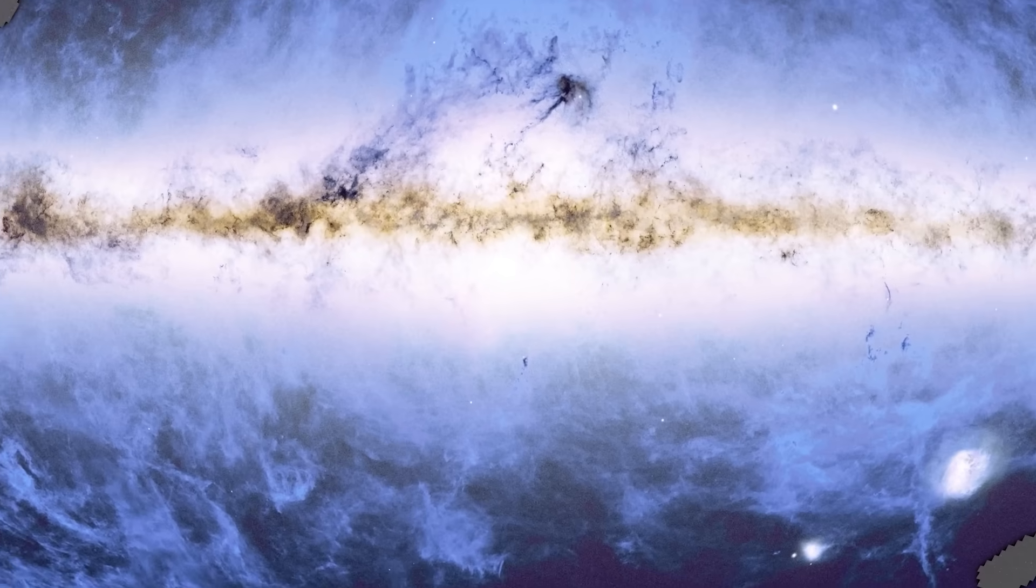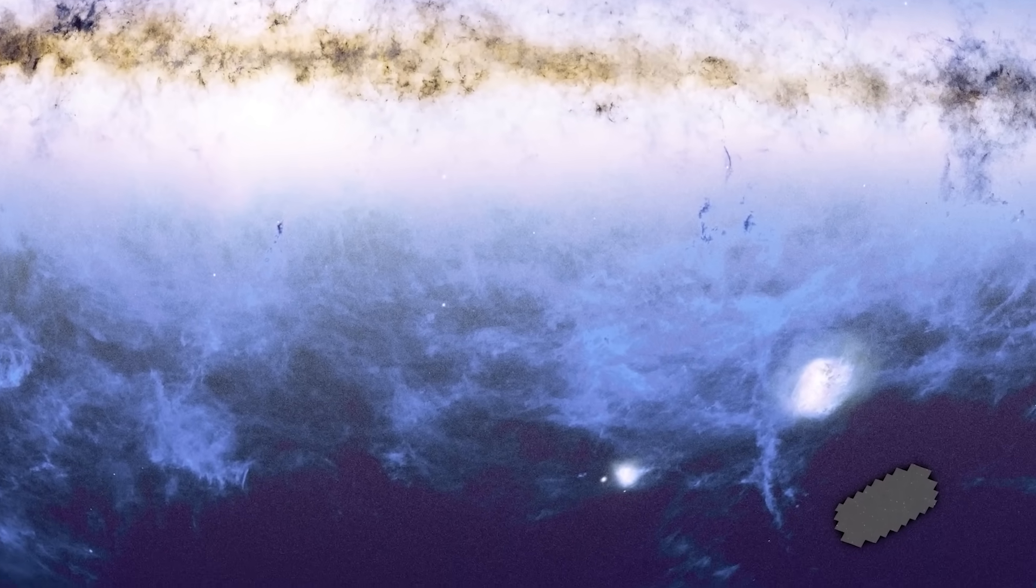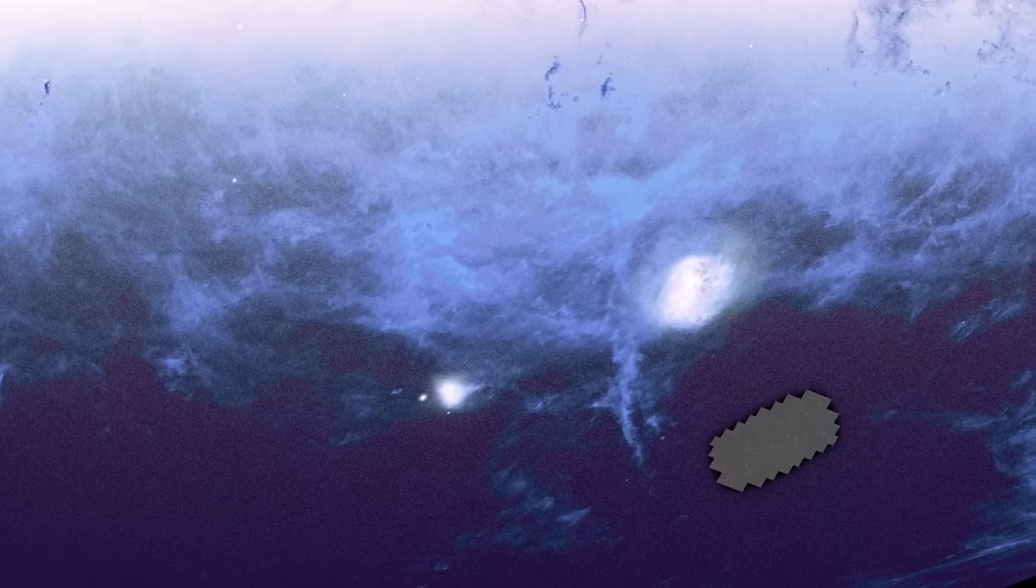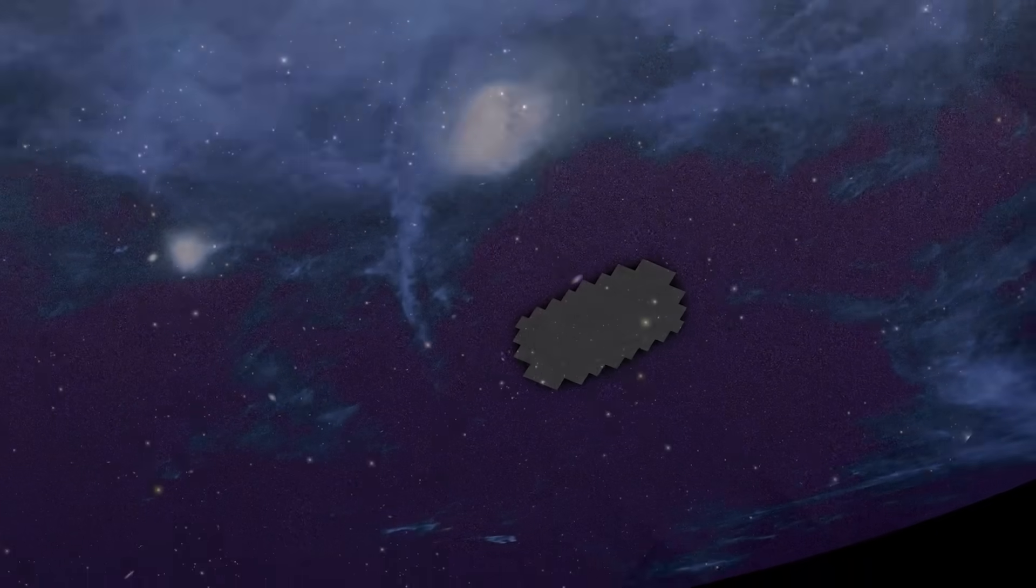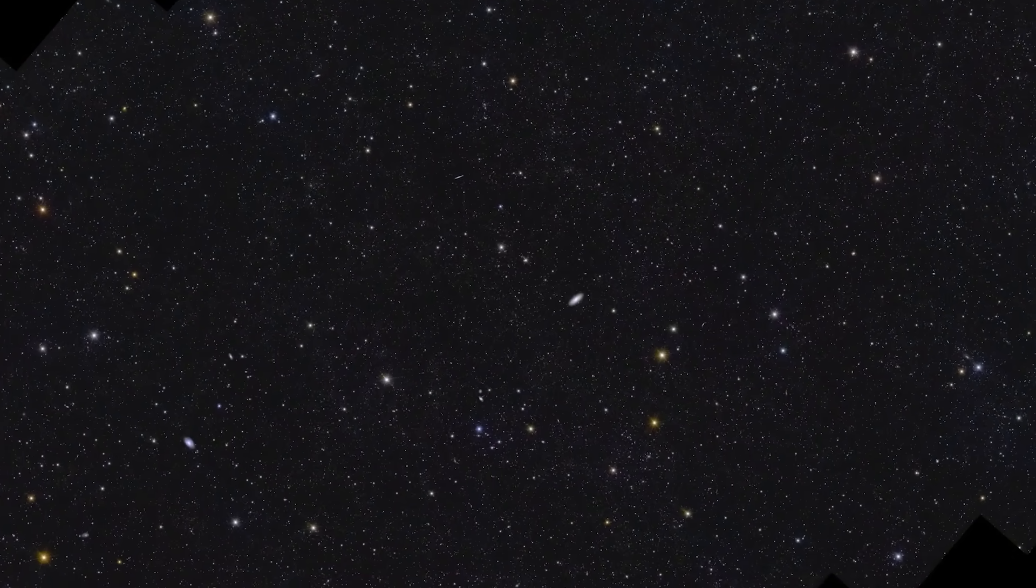With that, we arrive at the third and final deep field, the Euclid Deep Field South, nestled between the Large Magellanic Cloud and the Fornax Field.